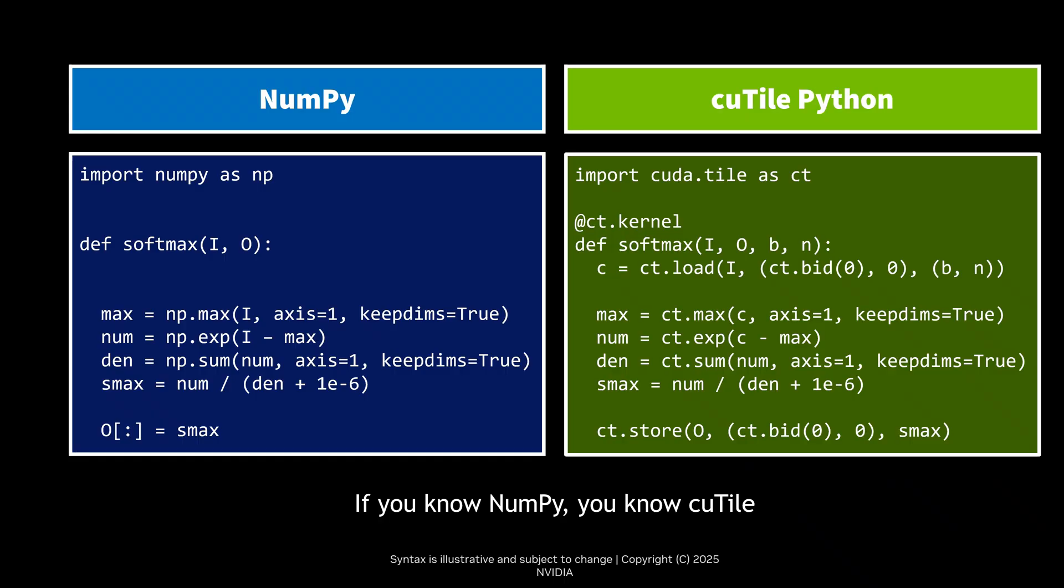If you know how to use NumPy, then you know how to use Qtile Python. Here's an example of Softmax, written on the left in straight NumPy and on the right in Qtile.